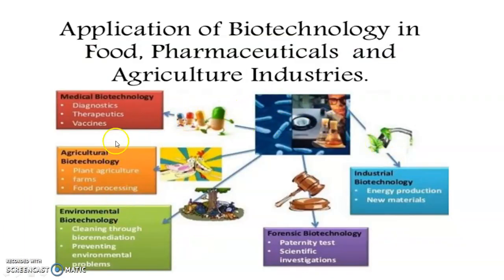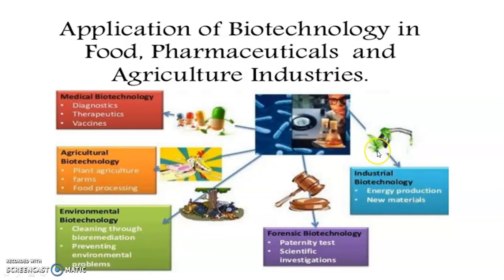There are many other areas of biotechnology application — food, pharmaceuticals, agriculture. There is also industrial biotechnology and energy production. Bioluminescent plants have been created with a gene introduced for giving light at night — the gene from a firefly has been introduced. Such bioluminescent plants have a very important role in saving power and energy; they can be used for street lighting.